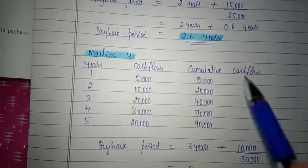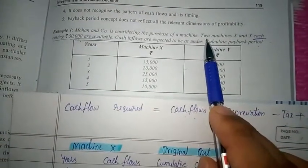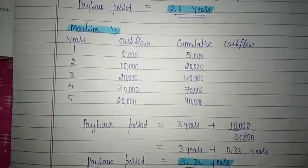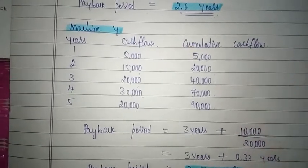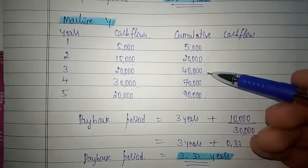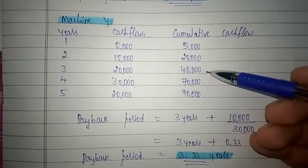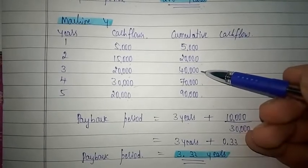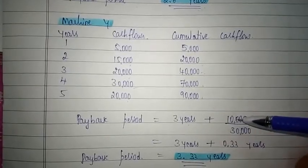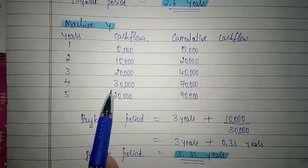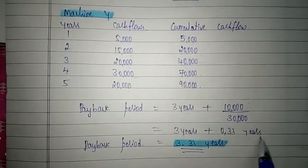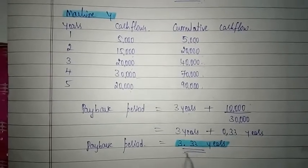The original investment for machine Y is also 50,000, as both machines each cost Rs. 50,000. We need to recover 50,000. The company can recover 40,000 by year 3. So payback period equals 3 years plus remaining amount: 50,000 minus 40,000 equals 10,000. This 10,000 can be recovered in the fourth year, where cash flow is 30,000. So 10,000 divided by 30,000 equals 0.33 years. Payback period = 3 years + 0.33 years = 3.33 years.